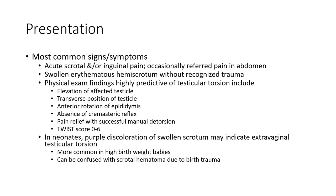Presentation: The most common symptoms are acute scrotal and/or inguinal pain, occasionally referred pain in the abdomen. Swollen, erythematous hemi-scrotum without recognized trauma. Physical examination findings highly predictive of testicular torsion include elevation of the affected testicle, transverse position of testicle, anterior rotation of epididymis, absent cremasteric reflex, and pain relief with successful manual detorsion.